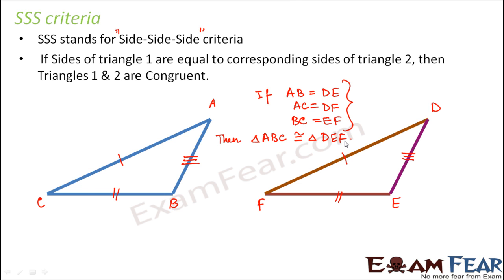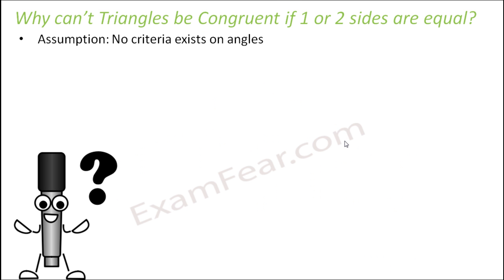SSS stands for side, side, side — meaning all three sides of one triangle should be equal to the corresponding three sides of the other triangle. Now the question is: why can't triangles be congruent if only one or two sides are equal? Why is it necessary that all three sides must be equal?